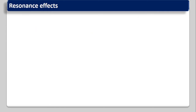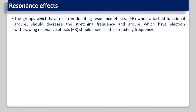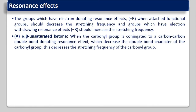Now we will see the resonance effect. The same idea applies: effects which increase multiple bond character increase bond strength and stretching frequency, while effects that decrease multiple bond character decrease it. Groups with an electron-donating resonance effect (+R effect) when attached to the functional group should decrease the stretching frequency, and groups with electron-withdrawing resonance effect (-R effect) should increase the stretching frequency.